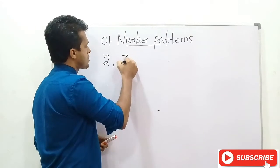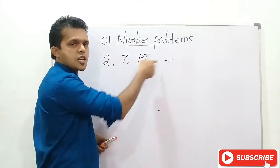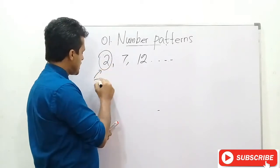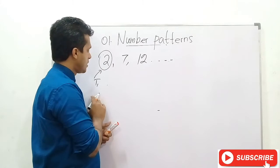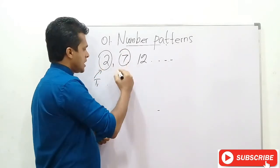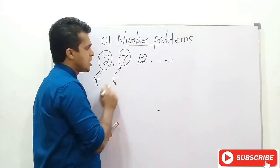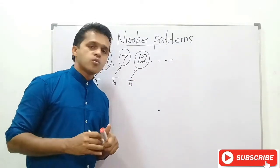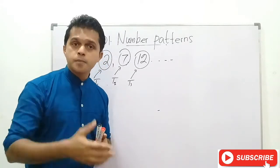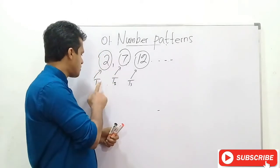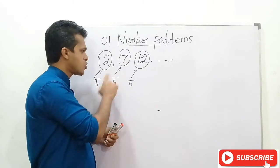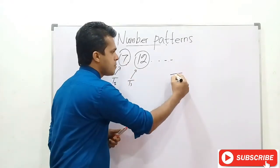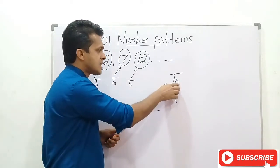Consider the number pattern 2, 7, 12. Here 2 plus 5 equals 7, and 7 plus 5 equals 12. In this number pattern, 2 is named as T1, 7 is named as T2, and 12 is named as T3. The terms of a number pattern are expressed using T: the first term as T1, the second as T2, the third as T3, and the Nth term as TN.